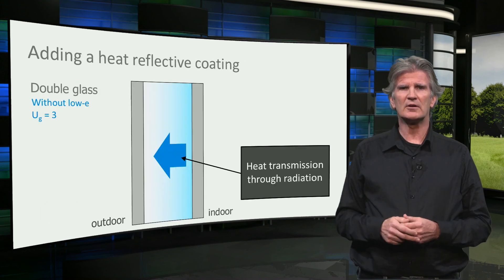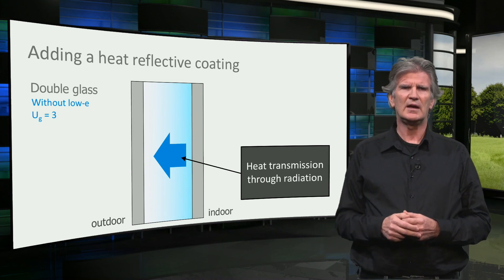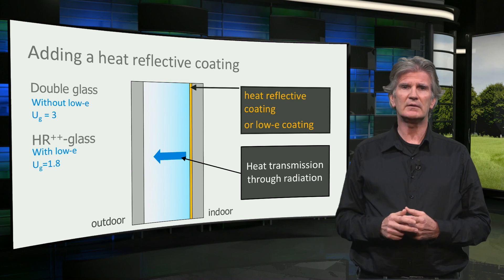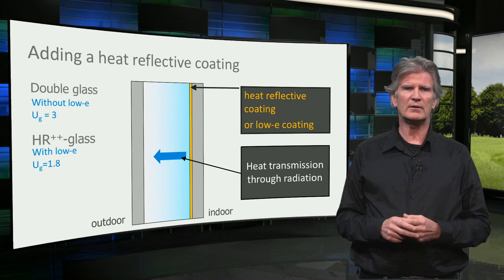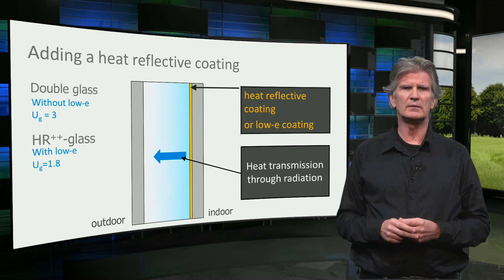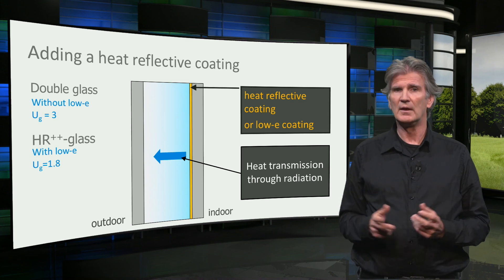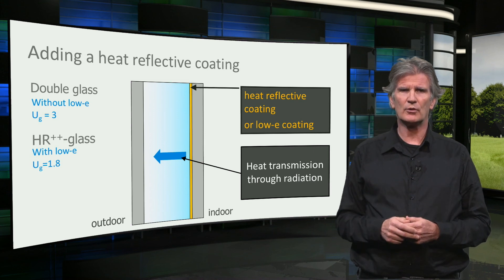The second technology is to apply a so-called low-E coating, which reflects the infrared radiation and reduces the heat transmission through the cavity. This coating is a very thin, invisible layer of just a few molecules of metal. By adding this coating, the U-value of double glazing can be reduced from 3 to 1.8. Glass with this type of coating is called HR++ glass.